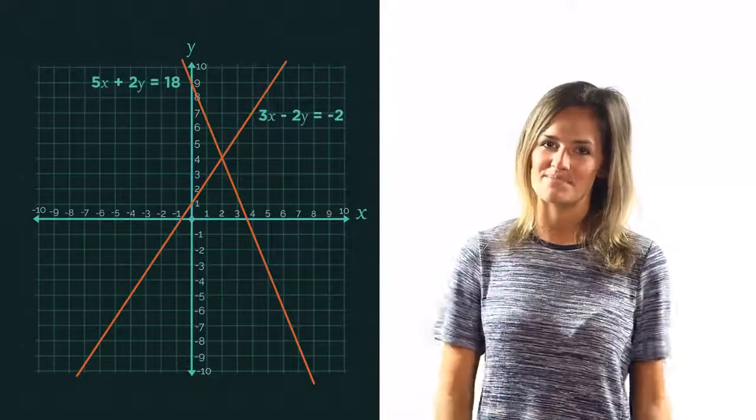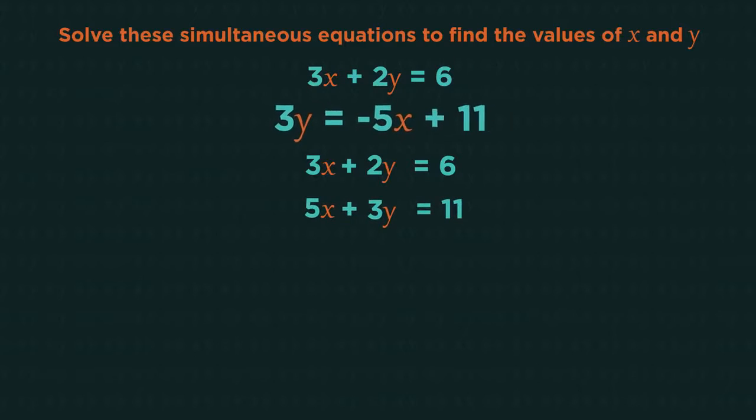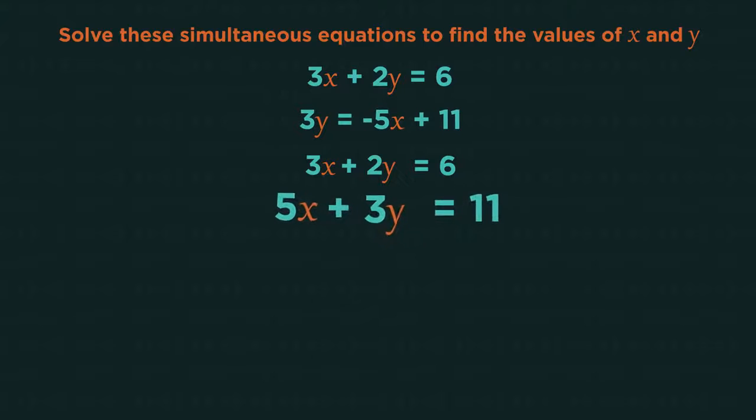That's all there is to it. Much faster than having to plot the graphs. Let's have a look at another example. So we start by lining the two equations up, which means we'll need to rearrange the bottom equation to become 5x plus 3y equals 11.